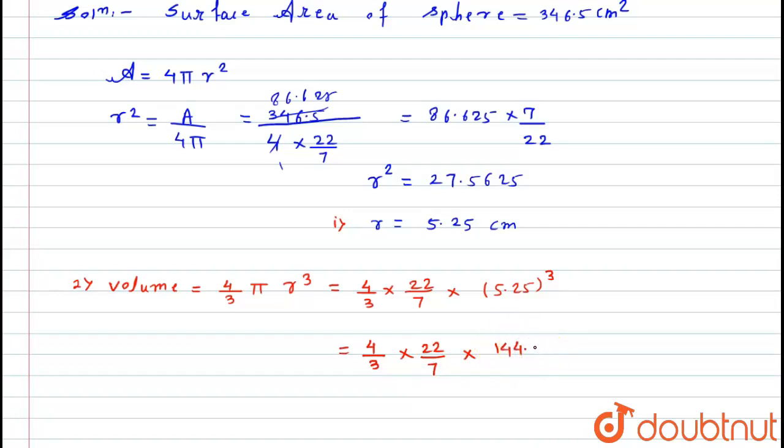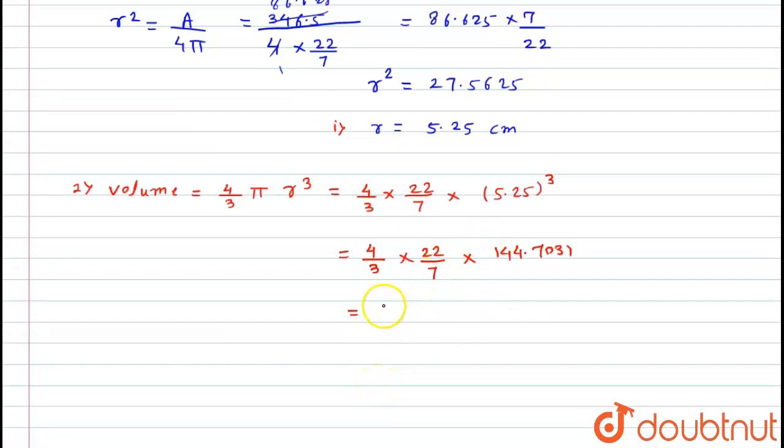Now if I will divide this term by 7, so I will get here 4 into 22 divided by 3 into when I will divide this term by 7, I will get simply 20.6718.